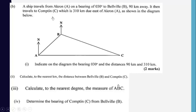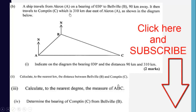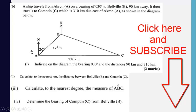Now the navigation part: a ship travels from A on a bearing of 030 degrees to B, 90 kilometers away, then travels to C which is 310 kilometers due east of A. We indicate the bearing of 030 degrees, the distance of 90 kilometers from A to B, and the 310 kilometers due east of A to C on the diagram.